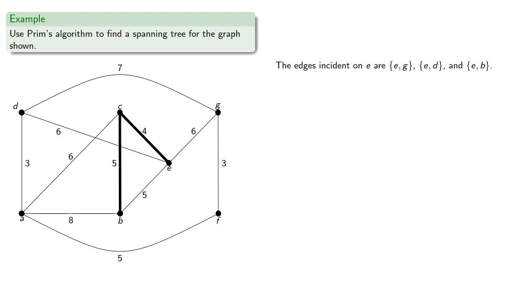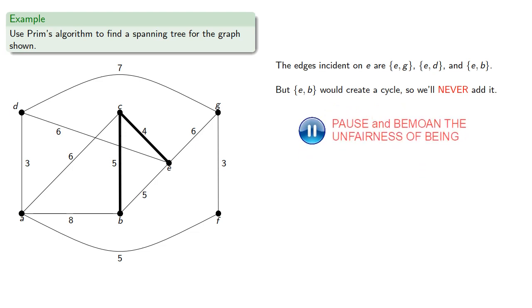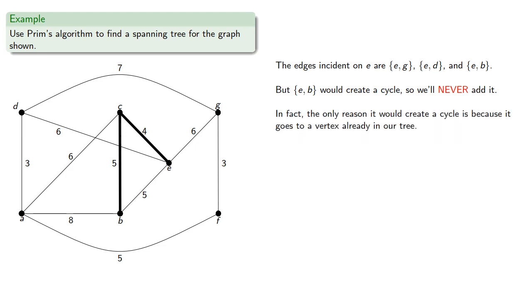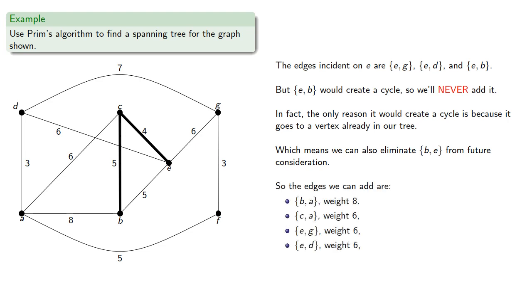The edges incident on E are EG, ED, and EB. But EB would create a cycle, so we'll never add it. In fact, the only reason it would create a cycle is because it goes to a vertex already in our tree, which means we can also eliminate the edge BE from future consideration.